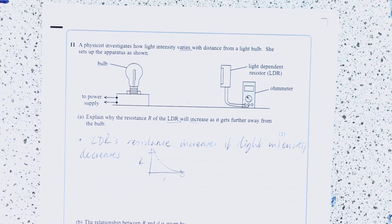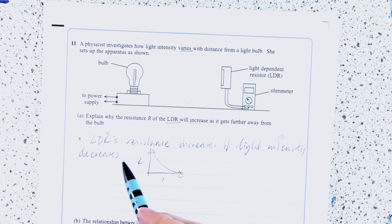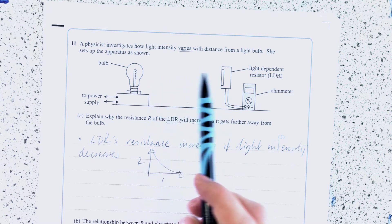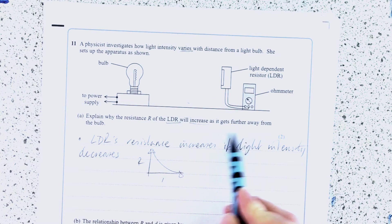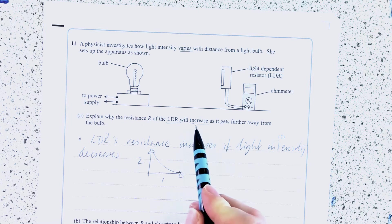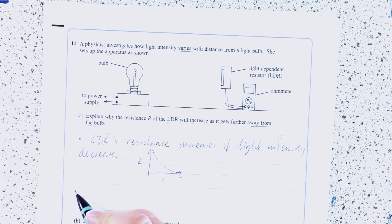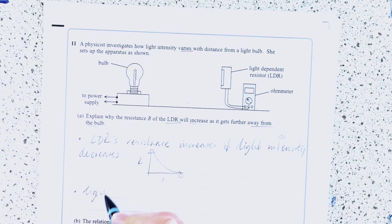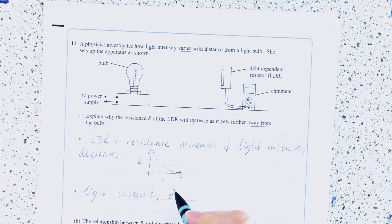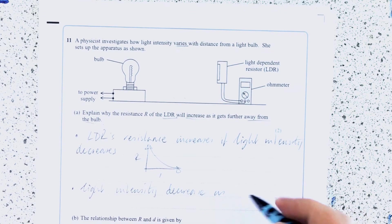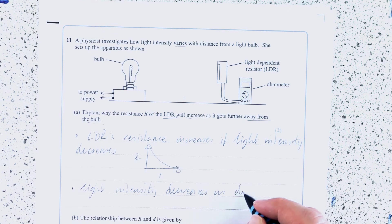How do we know that the light intensity is going to decrease? Well, because it gets further away from the bulb. So we need to state that. Light intensity decreases as distance increases.